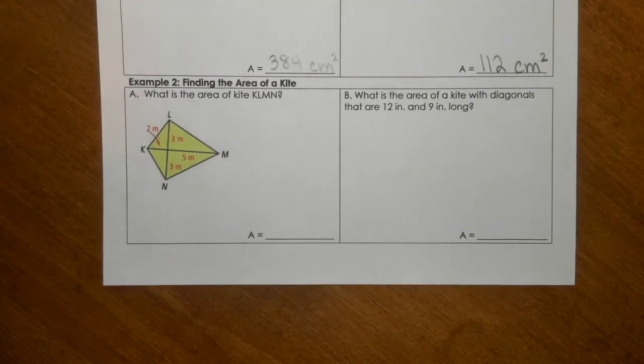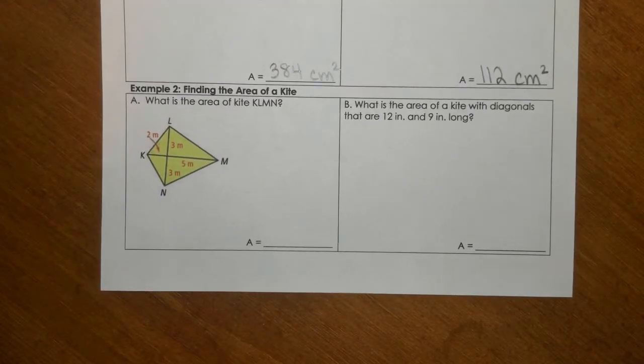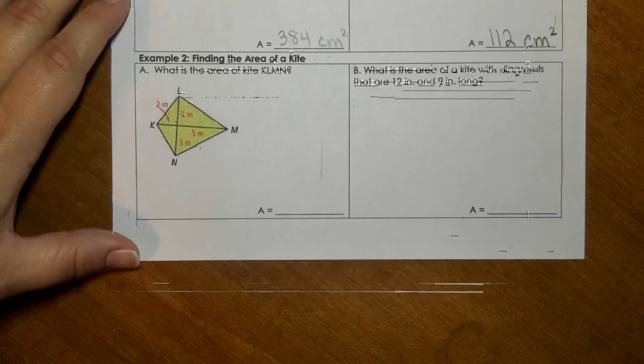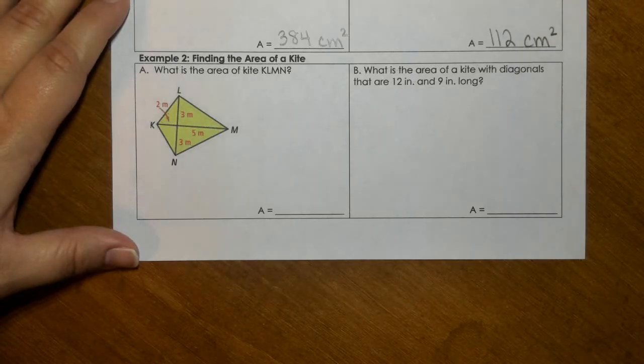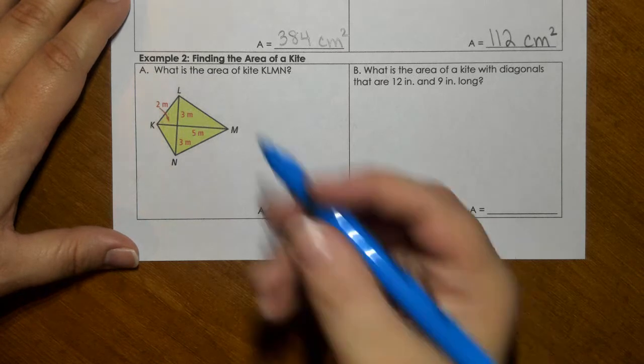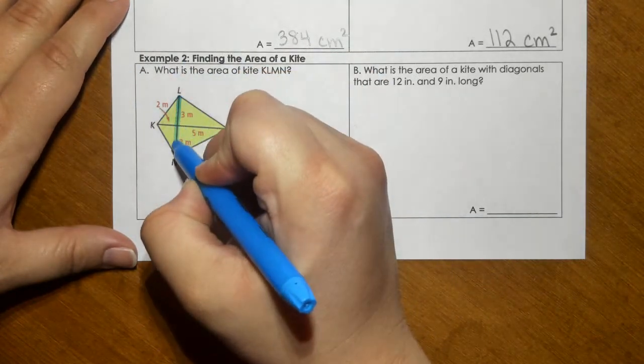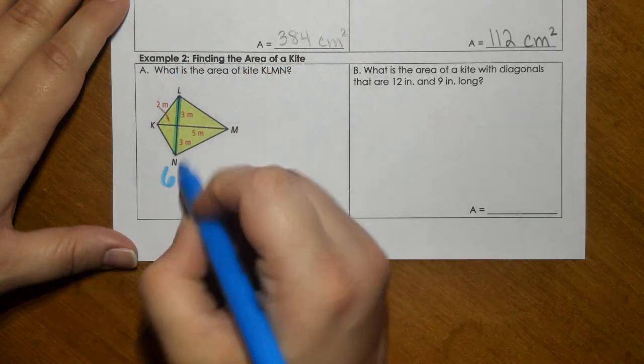For example 2, for the kite, we're also going to find the diagonals. So here you can see that both of these are 3 and 3. So that diagonal is going to be 6 meters.